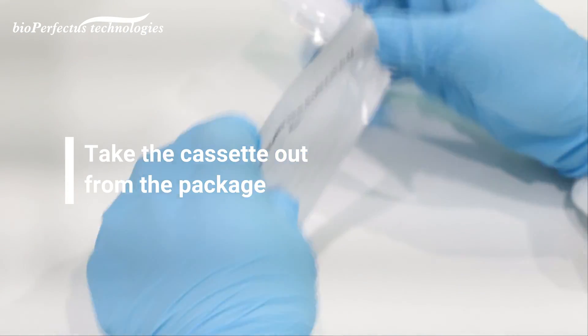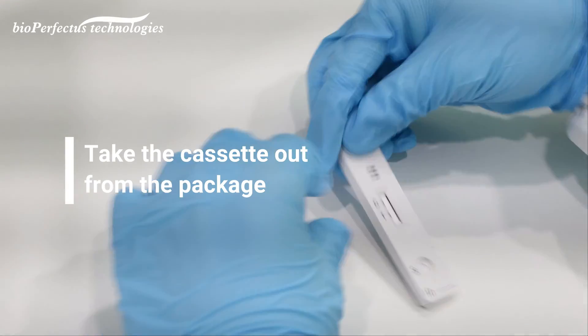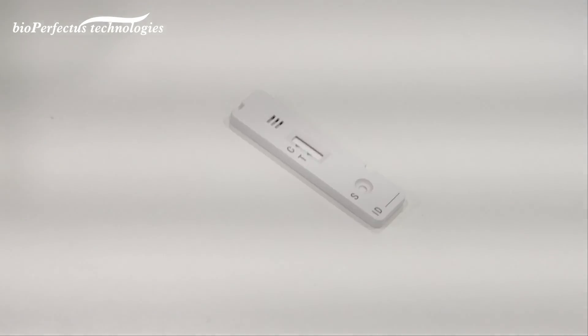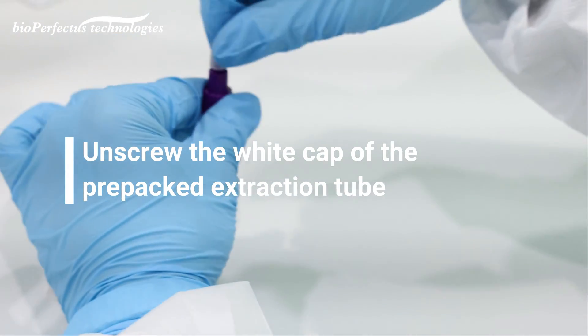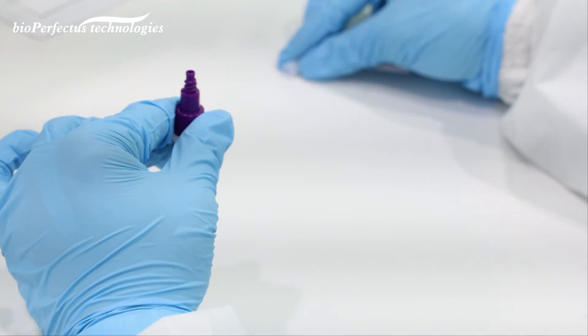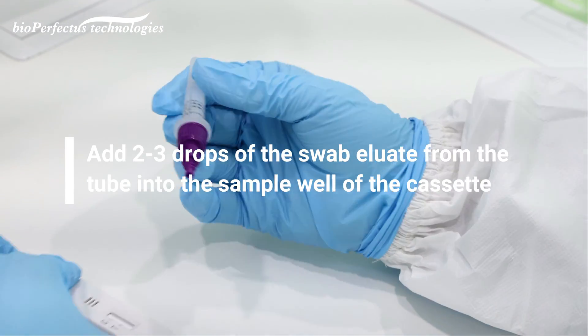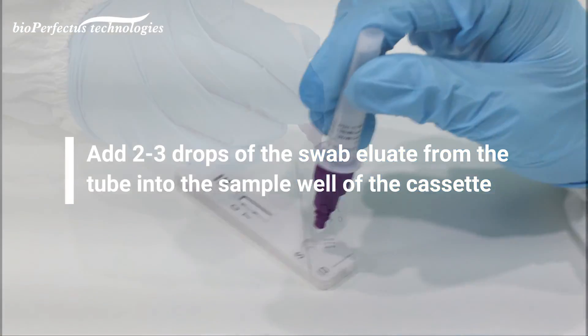Take the cassette out from the package. Unscrew the white cap of the prepacked extraction tube. Add 2 to 3 drops of the swab eluate from the tube into the sample well of the cassette.